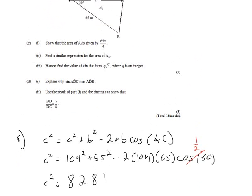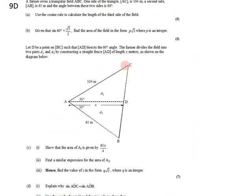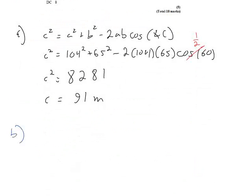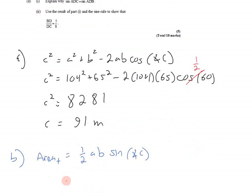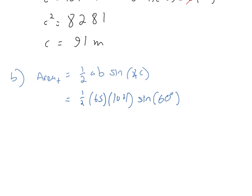For Part B, we want to find the area of the whole triangle. The area of a triangle is one half times the product of two sides times the sine of the angle between them. We only know this one angle — 60 degrees — so the two sides adjacent to it will be 104 and 65. The total area will be one half times 65 times 104 times the sine of 60 degrees.